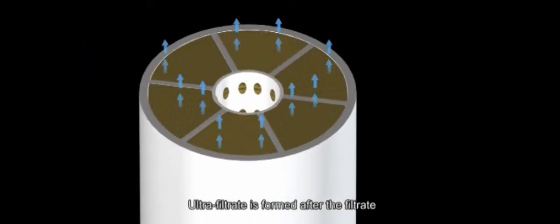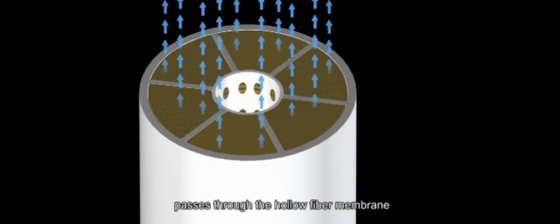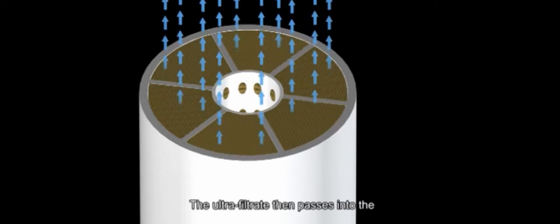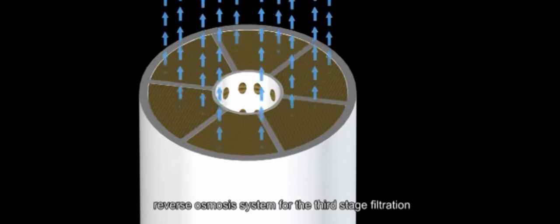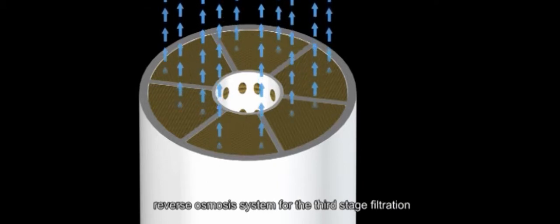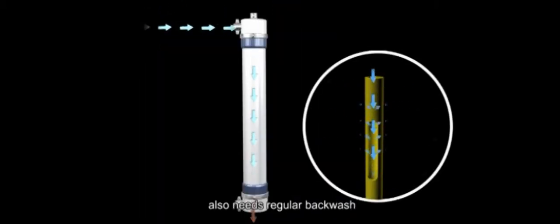Ultrafiltrate is formed after the filtrate passes through the hollow fiber membrane of the ultrafiltration system. The ultrafiltrate then passes into the reverse osmosis system for the third stage filtration. The ultrafiltration system also needs regular backwash.